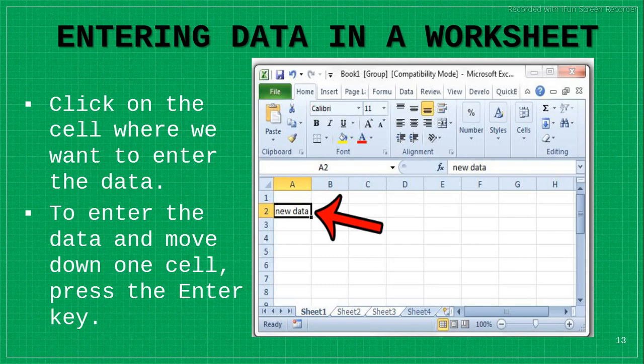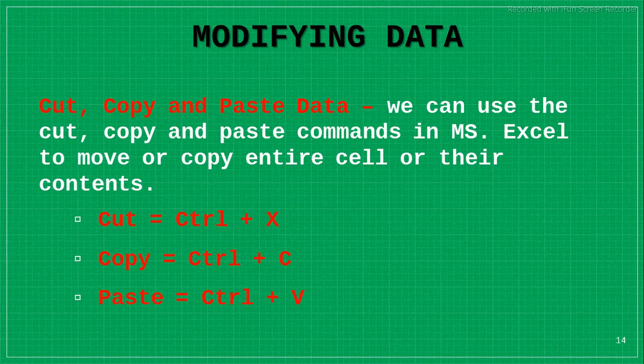Let's move to another topic: modifying your data. If you want to modify your data, you can use three options: Cut, Copy, and Paste. With Cut, Copy, and Paste you can modify data entered in an Excel sheet. These options are present in the Home tab. The shortcut key for Cut is Ctrl+X, for Copy is Ctrl+C, and for Paste is Ctrl+V.